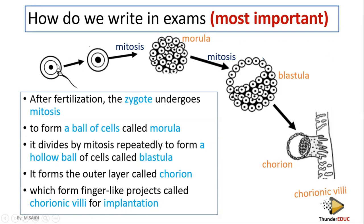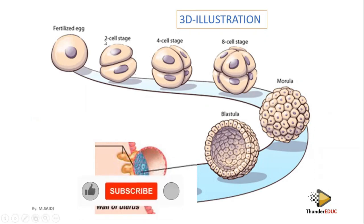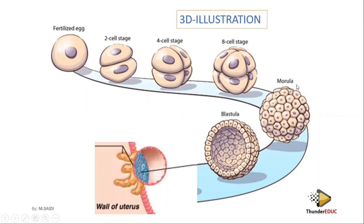That's all you need to know. The zygote is diploid — the ovum is haploid, the sperm is haploid, and together they form the diploid zygote. The morula and blastula are also diploid. These are undifferentiated cells that can develop into other structures. Looking at the 3D presentation: after fertilization the egg undergoes mitosis repeatedly to form the morula, which then forms the hollow ball called the blastula.